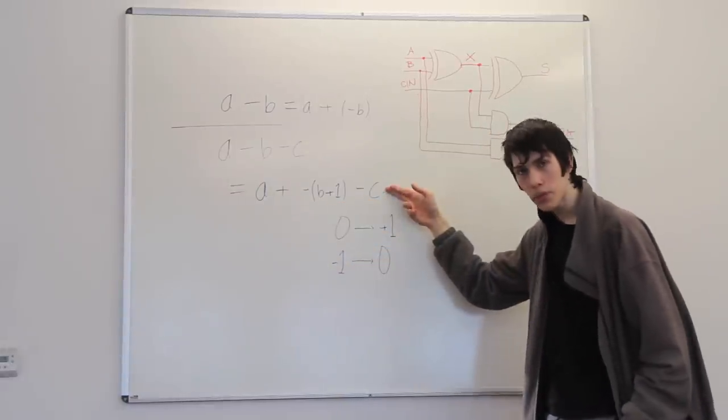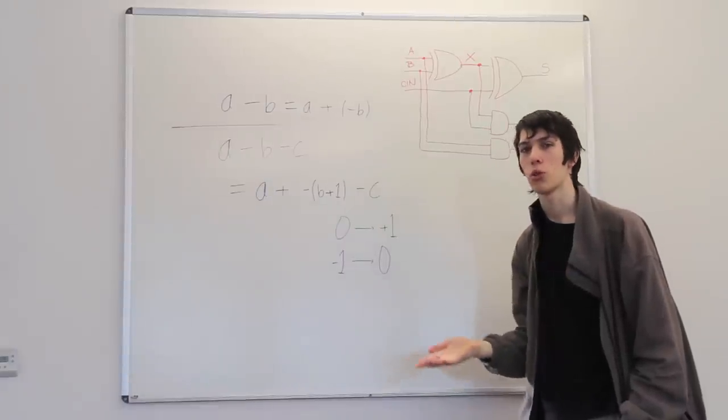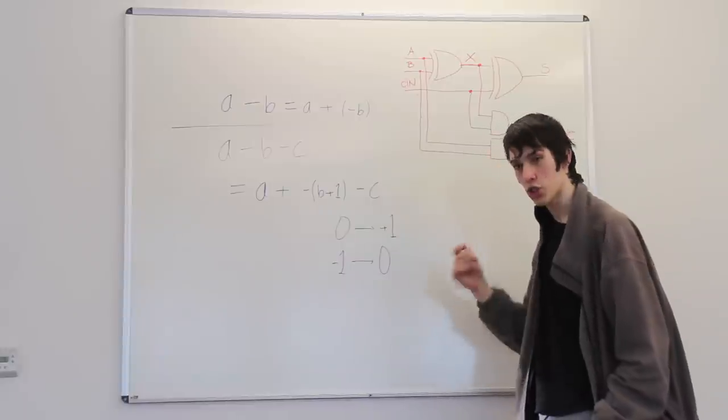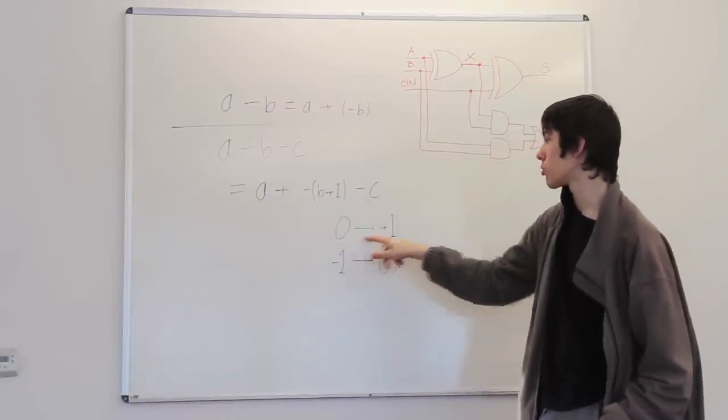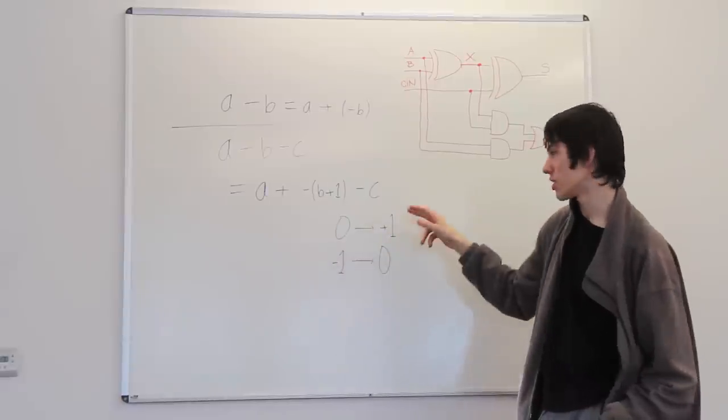Then the carry bit is a bit harder. Because when you're doing a subtraction, the carry bit is no longer worth plus 1. It's worth minus 1. But luckily if you flip that too, then the 0 goes to a plus 1. Because the carry bit that was 0 is now being added as a 1.